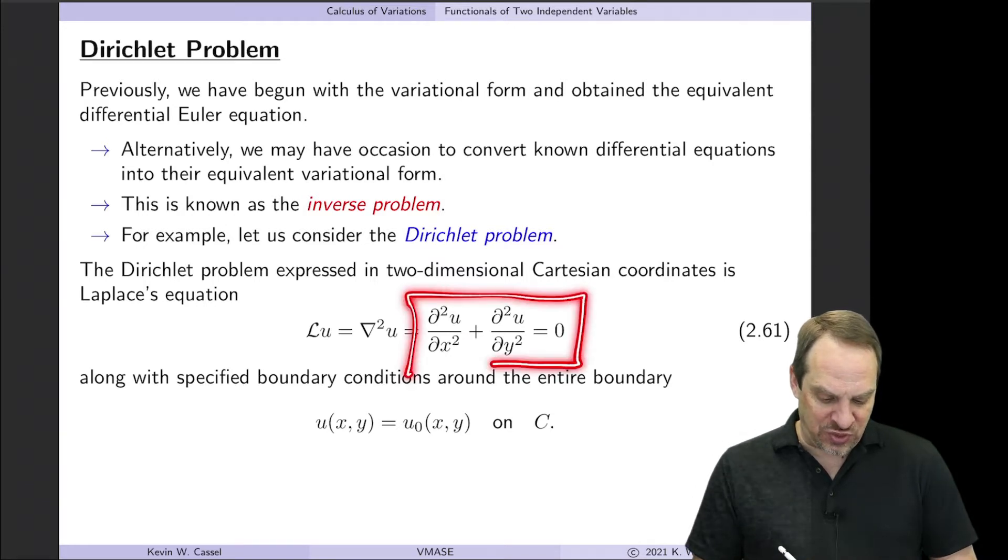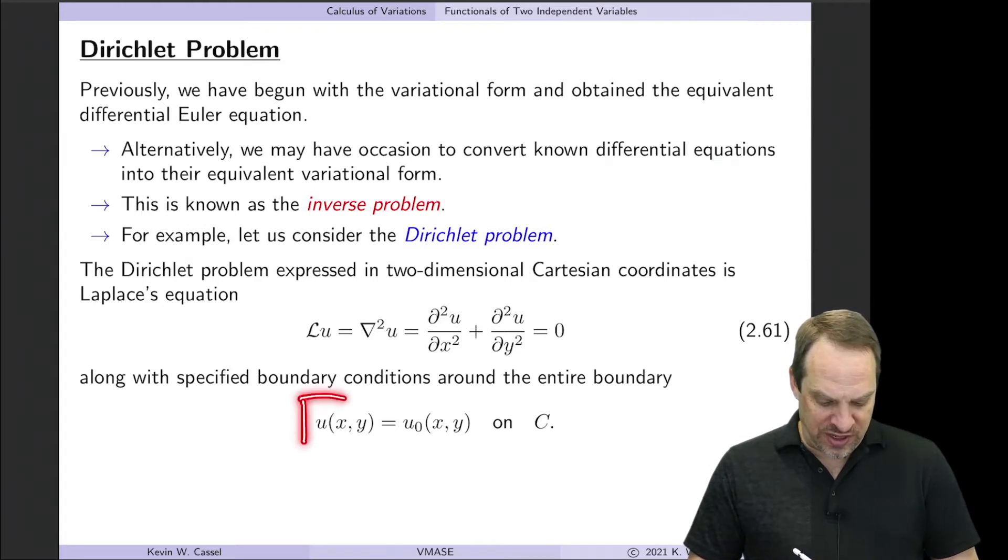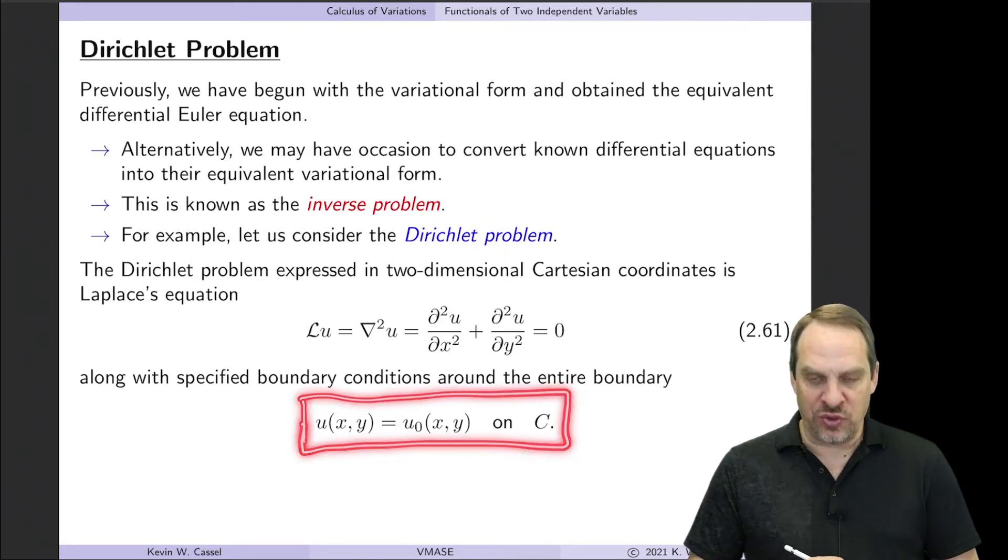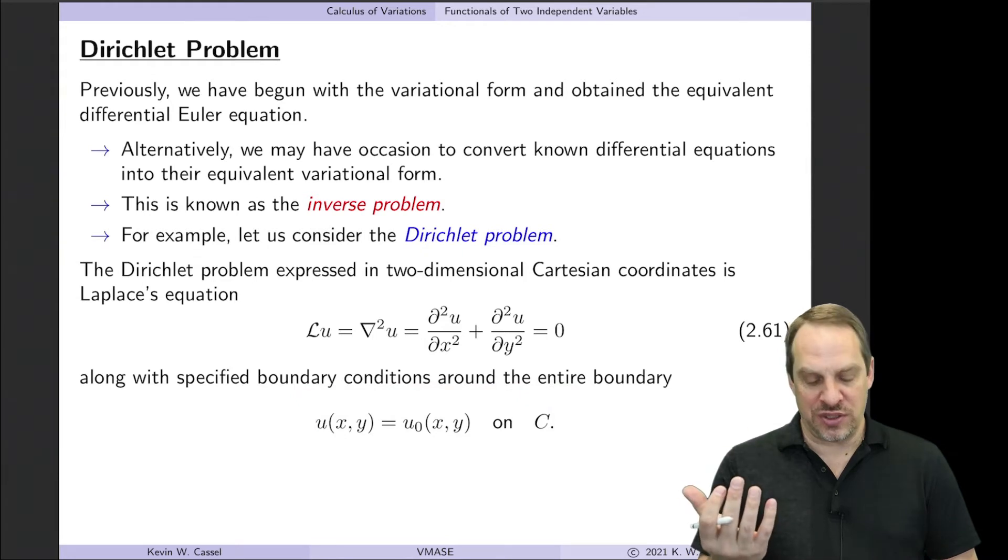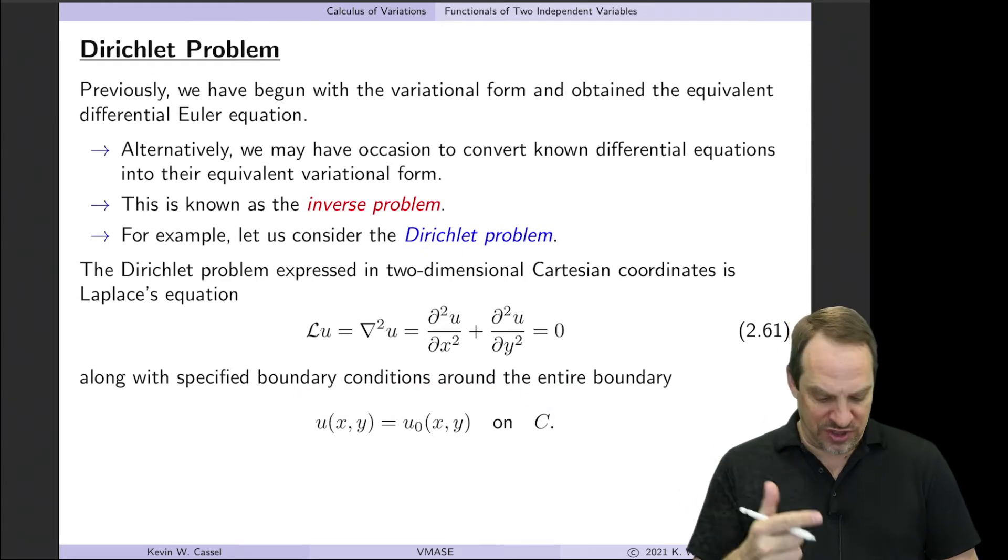So we have the Dirichlet problem. Once again, that's Laplace's equation, here given in two-dimensional Cartesian coordinates. And let's say that we have fixed boundary conditions all the way around the boundary. And that's what makes it the Dirichlet problem. Laplace's equation plus fixed boundary conditions.